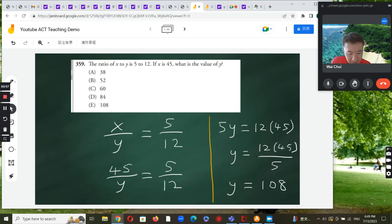x over y is 5 over 12. This math expression is equivalent to the ratio of x to y is 5 to 12.